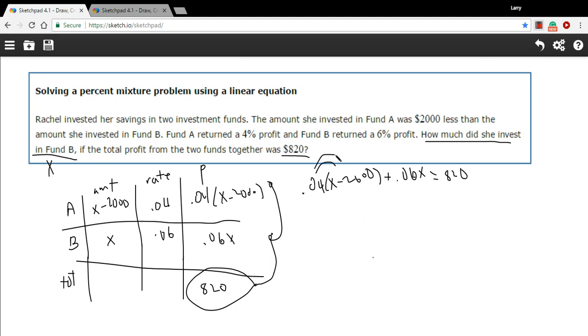Let's see. We'll start by distributing the 0.04 here. So 0.04 times X, 0.04 times negative 2,000 should be negative 80. And then we have 0.06X and 820. So let's see. I think I'm going to do two steps here at once. I'm going to combine my like terms. 0.04 plus 0.06X should just be 0.1X. And then I'll also add 80 to each side. So in that case I should get 0.1X equals 900. And dividing by 0.1, same as multiplying by 10, you get X equals 9,000. So she invested $9,000 in Fund B.